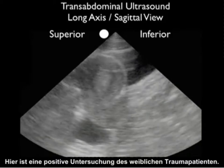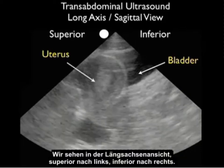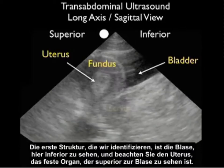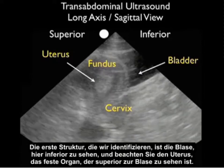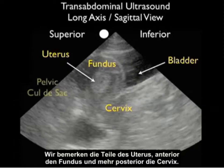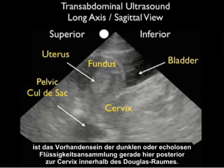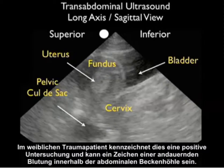Here's a positive examination in a female trauma patient — we're looking in the long axis view, superior to the left and inferior to the right. The first structure we identify is the bladder inferiorly, and the uterus, the solid organ, is superior to the bladder. We note the fundus anteriorly and the cervix more posteriorly. Looking into the pelvic cul-de-sac immediately posterior to the uterus, we see the presence of a dark or anechoic fluid collection just posterior to the cervix. This denotes a positive examination and can be a sign of ongoing bleeding within the abdominal pelvic cavity.